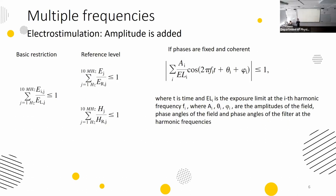What if a device is not working at only one frequency, but has a spectrum of frequencies working simultaneously? For electrostimulation effects below 10 MHz, you need to add amplitudes, because basic restrictions and reference levels are expressed in terms of amplitudes. So you just add the spectral components. If you have a wideband signal, you apply a Fourier transform to get the spectral components and add them together.